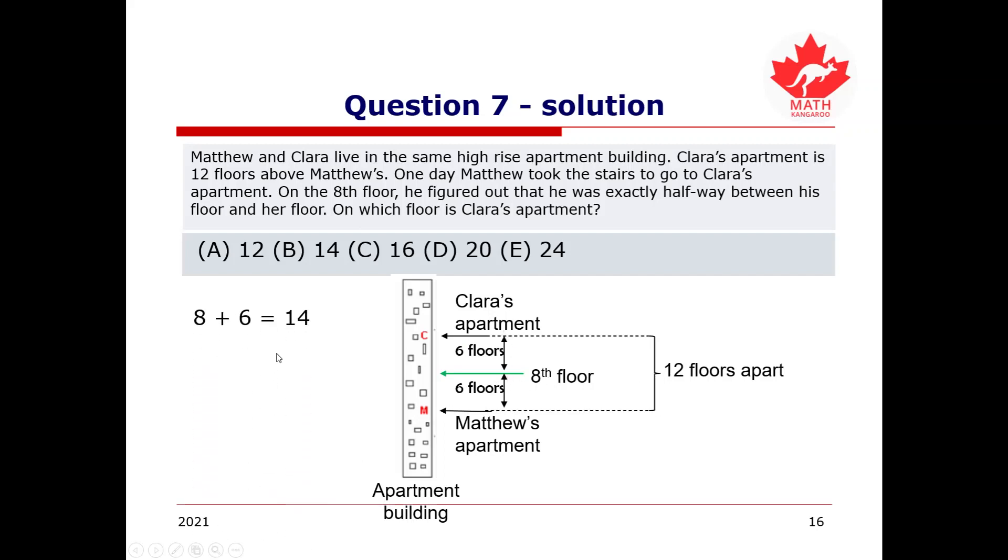So, since half of 12 is six, we simply can go, because we know from this eighth floor that he had six more floors to climb, we can simply go 8 plus 6, giving us 14. Therefore, we know that Clara is at the 14th floor on the apartment block. And, because B has 14 as its answer, we know that B must be the correct answer.